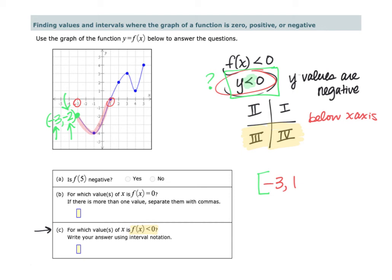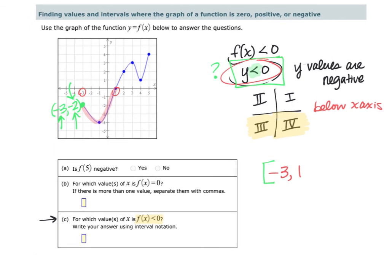Now let's look at x equals 1. So at this coordinate here, the coordinate is 1 comma 0. So again, we're looking at the y value. Is the y value here less than zero? And the answer here is no. This value is actually equal to zero. So because the y value here is not less than zero, we don't want to include x equals 1.